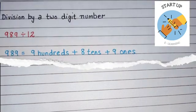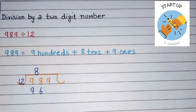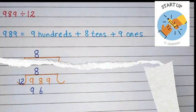That is 12 × 8 = 96. So under 98 we will write 96, and 8 will be written above the division bracket as the quotient. Let's subtract 96 from 98: 8 minus 6 equals 2, 9 minus 9 equals 0.